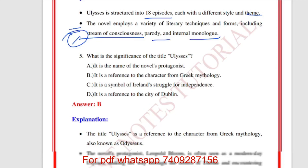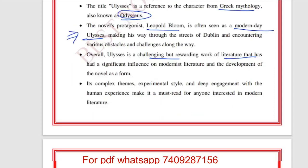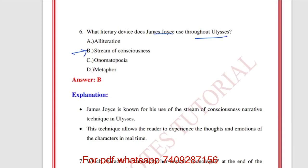Leopold Bloom makes his way through the streets of Dublin, encountering various obstacles and challenges. Overall, Ulysses is a challenging but rewarding work of literature that has had a significant influence on modernist literature. What literary device does James Joyce use throughout Ulysses? Stream of consciousness.